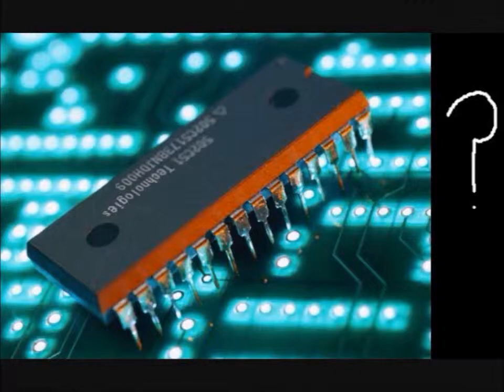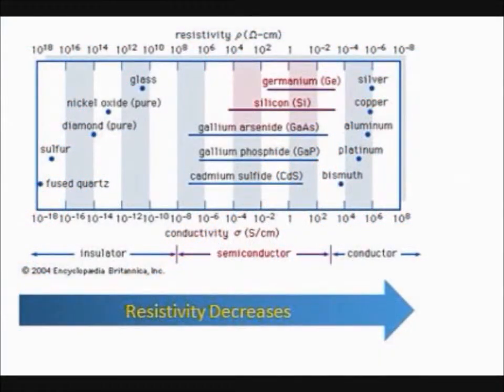What is this semiconductor that makes modern tech possible? It is a substance with electrical resistivity less than insulators and more than conductors.